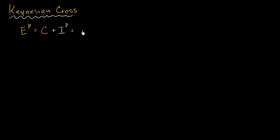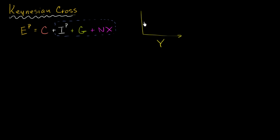And then, of course, you have government spending, and finally net exports. For the sake of Keynesian cross analysis — and this is a super oversimplification — we're going to assume that at any given level of GDP or aggregate output, planned investment, government spending, and net exports are all constant. They are not dependent on aggregate output or GDP. So if we were to plot any of these versus aggregate income, they would be a flat line.